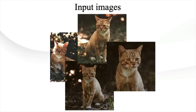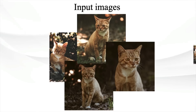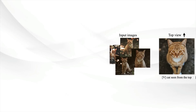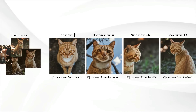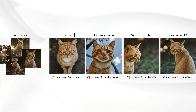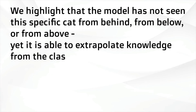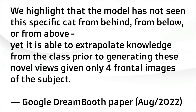The Google Research team fine-tuned the model on pictures of cats, and then they asked it: what would that cat look like from the top? What would the cat look like from the bottom, and from the side and from the back? Note that the fine-tuned input images never featured the cat from these different angles, especially the cat seen from the back. In the paper, Google Research says: we highlight that the model has not seen the specific cat from behind, from below, or from above, yet it is able to extrapolate knowledge from the class prior to generating these novel views, given only four frontal images of the subject.